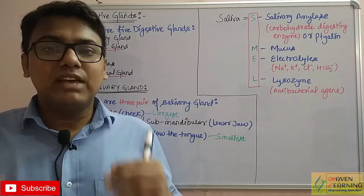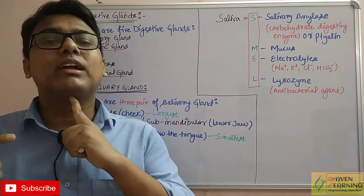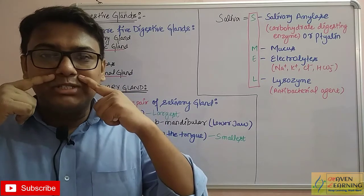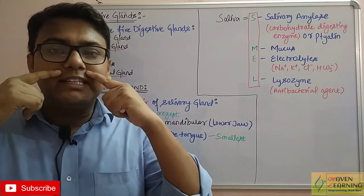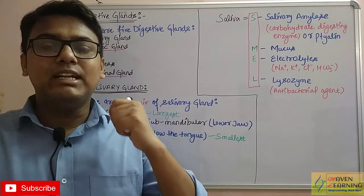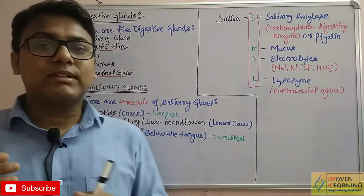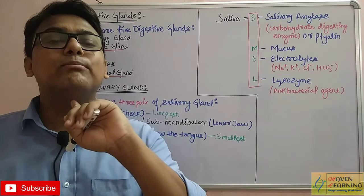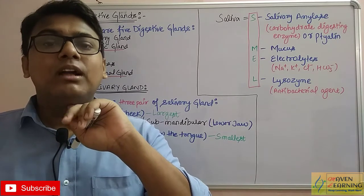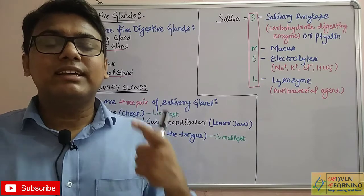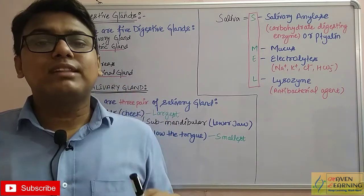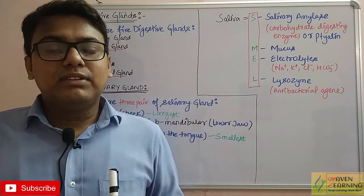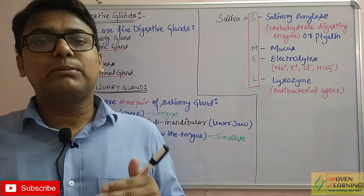The sub-mandibular salivary gland is located just below the lower jaw. The upper jaw is called maxilla and the lower jaw is called mandible. So sub-mandibular means below the lower jaw — that is why this gland is named sub-mandibular.